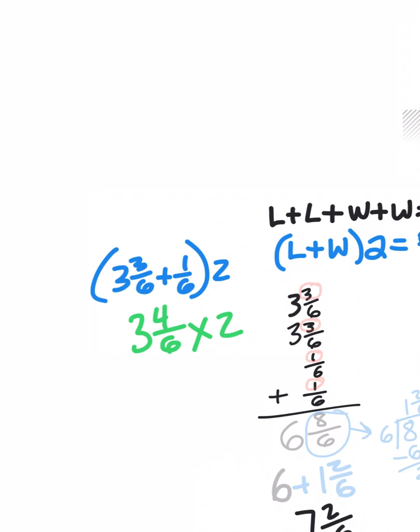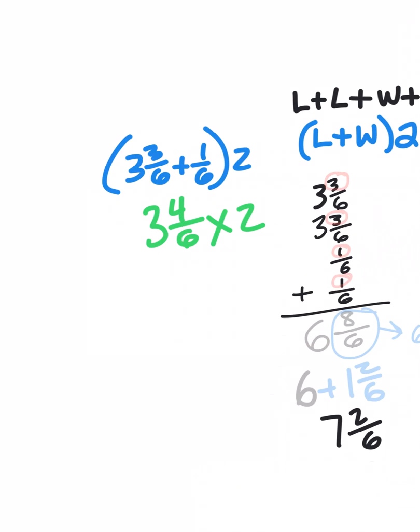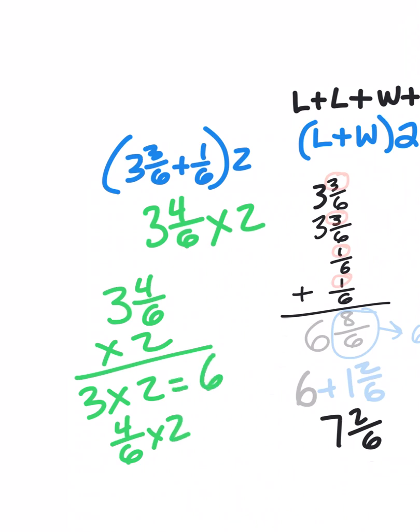When I multiply a mixed number, I can use the same strategies that I use when I multiply a large-digit number, like the partial products. When I multiply 3 and 4 sixths times 2, that's the same as saying 3 times 2 and 4 sixths times 2. 3 times 2 is 6. 4 sixths times 2, and I'm only multiplying the numerator here, 4 times 2 is 8 sixths. If we add those two partial products together, we get 6 and 8 sixths, which we converted over here to 7 and 2 sixths.